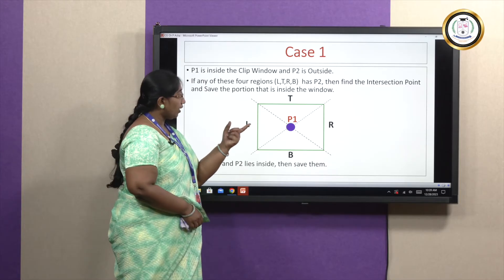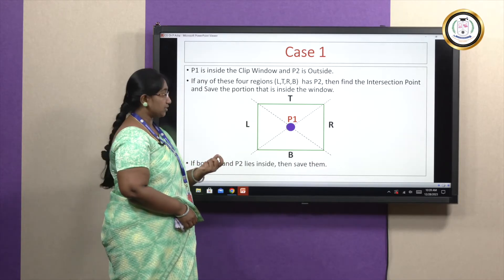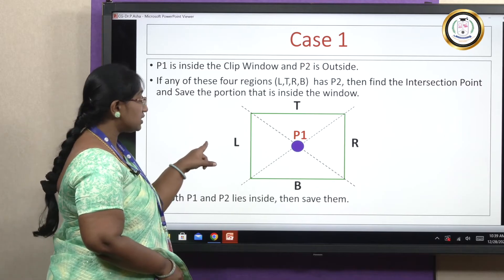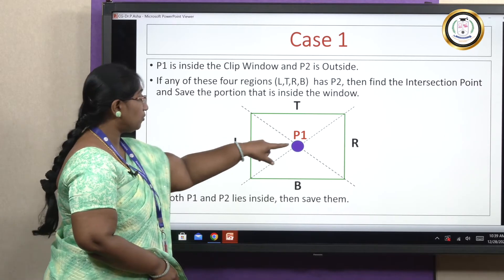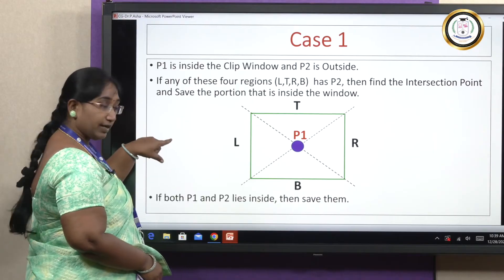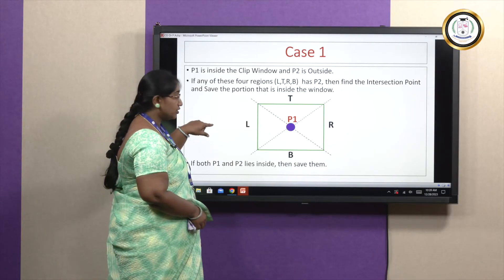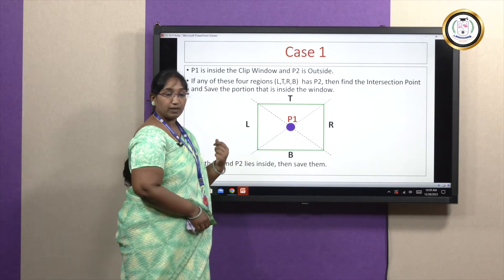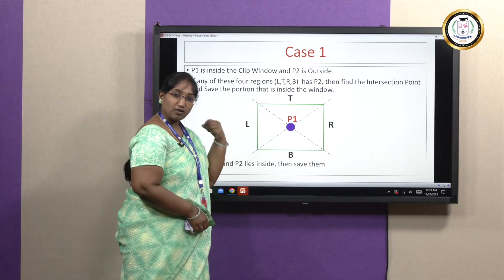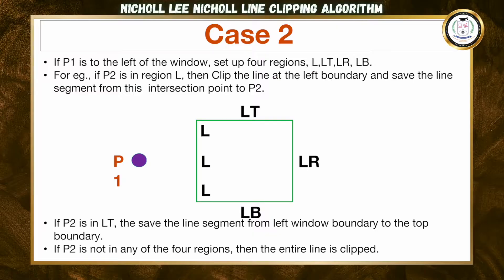Next, we find where P2 is present. For example, if P2 is in the left boundary region, we find the intersection point at the place where the line crosses the left boundary.